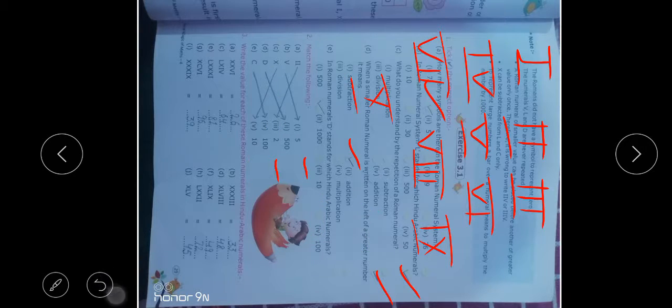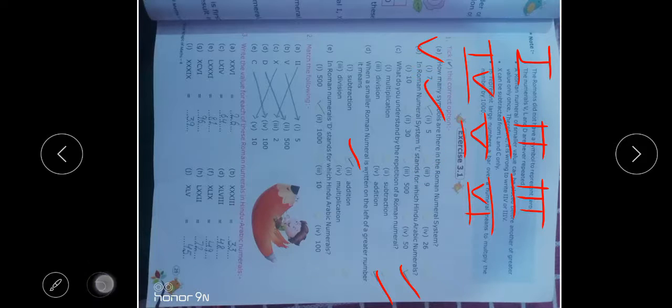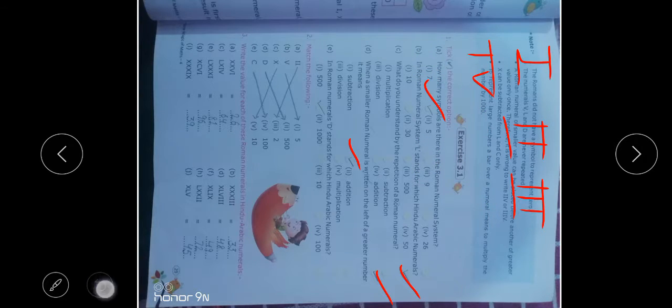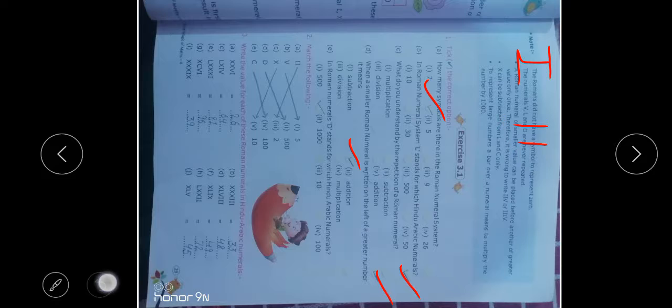This is our question number second. Now let's come to the next question, which is question number third. Question number third asks: Write the value of each of these Roman numerals in Hindu Arabic numerals. Look, what is written here? I told you, this is 10, 10, 10, 20. This became 25, and this became 26.